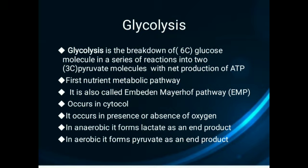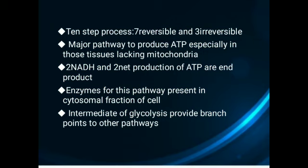In the presence of oxygen it forms pyruvate, and in the absence of oxygen it forms lactate as an end product. Glycolysis is a 10-step process — seven steps are reversible and three steps are irreversible. It is the major pathway to produce ATP, especially in those tissues which have no mitochondria, for example in cancer cells. Two NADH and two net ATP molecules are the end products of glycolysis.